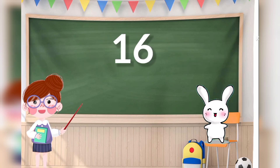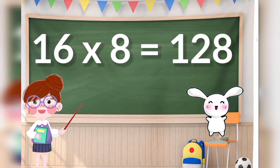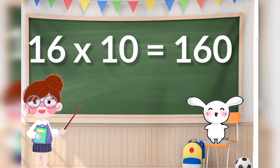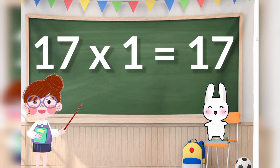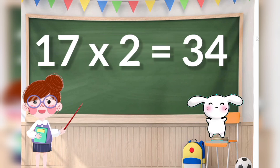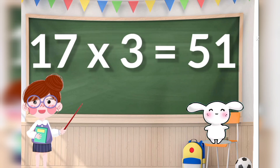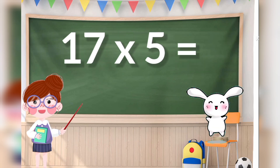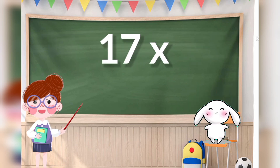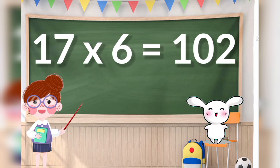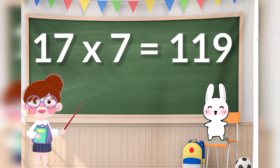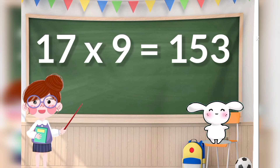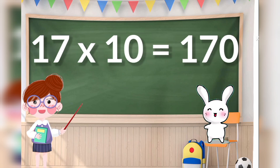16 eights are 128, 16 nines are 144, 16 tens are 160. 17 ones are 17, 17 twos are 34, 17 threes are 51, 17 fours are 68, 17 fives are 85, 17 sixes are 102, 17 sevens are 119, 17 eights are 136, 17 nines are 153, 17 tens are 170.